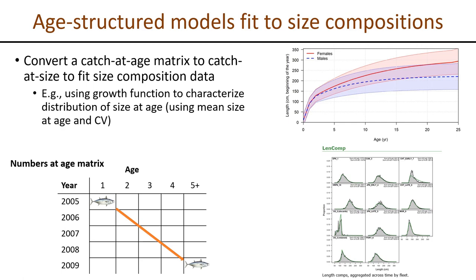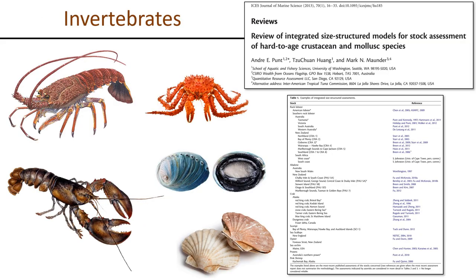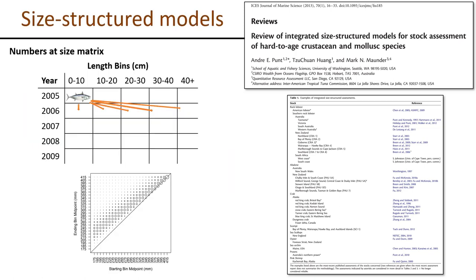The predominant approach to assess tuna stocks has been to develop age-structured assessments — fundamentally underpinned by a numbers-at-age matrix following cohorts through time — and to fit those models to size compositions by converting catch-at-age to catch-at-size via size-at-age distributions. This can be done in Stock Synthesis using a von Bertalanffy function to define mean size at age with some variability, such as a CV. There also exists another species group — notably invertebrate fisheries worldwide — that are also hard to age and only have size composition data.